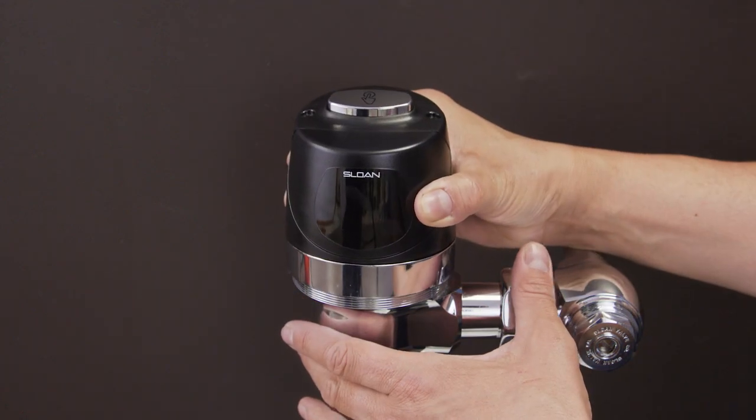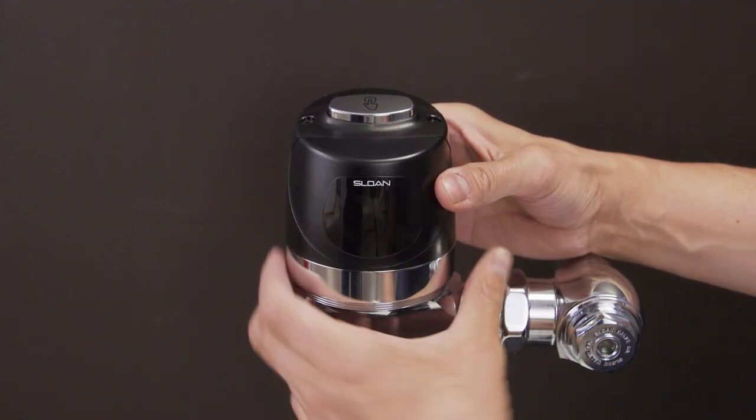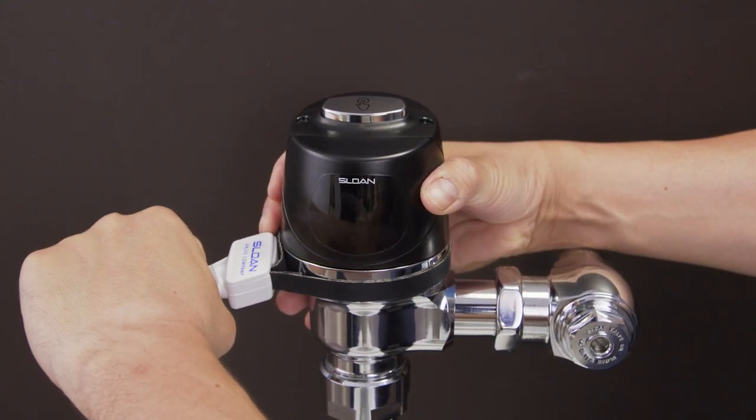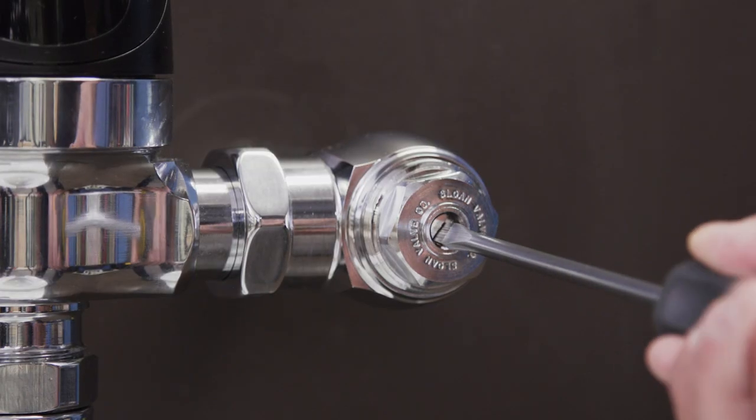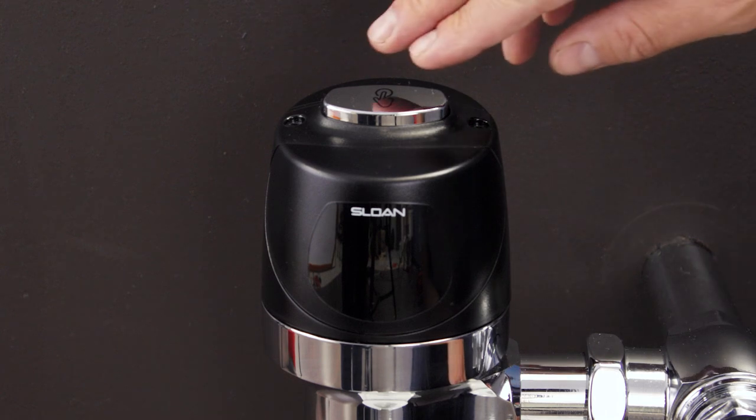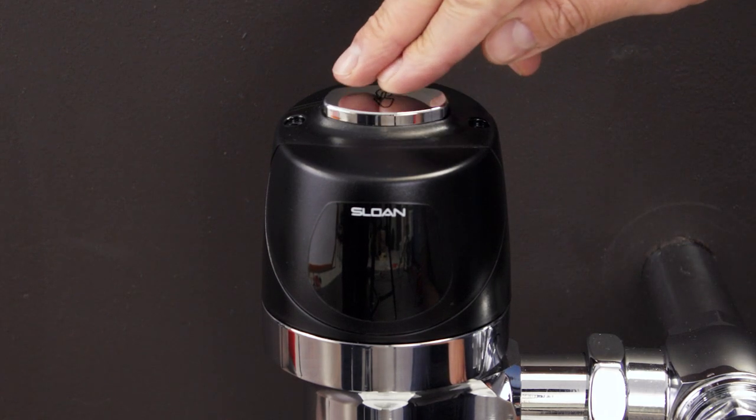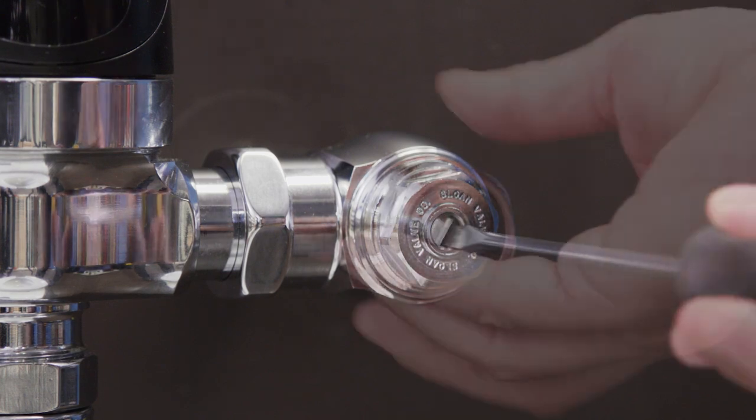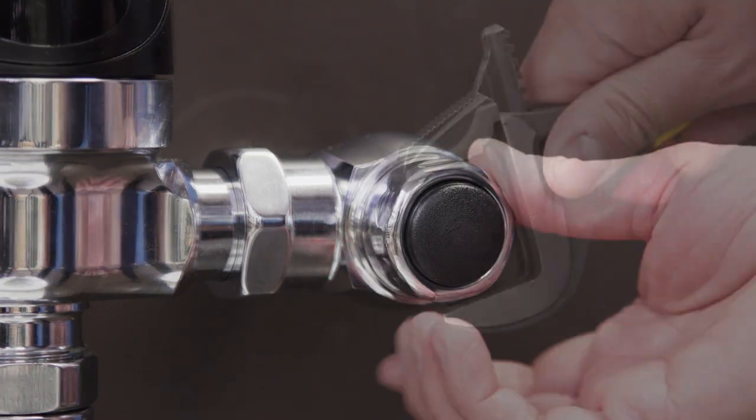Now align the head and hand tighten the locking ring. Next, use the strap wrench to secure the head. Turn on the water by opening the control stop. Now test the flushometer and adjust the control stop until you get a normal flush with quiet operation. Then finally, replace the cap.